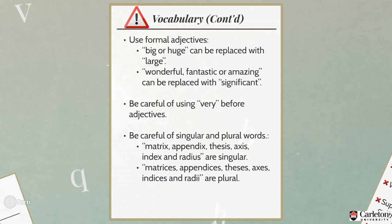Be careful when using adjectives. For example, "big" or "huge" can be replaced with "large"; "wonderful," "fantastic," or "amazing" can be replaced with "significant." Also, be careful of using "very" before adjectives — for example, when you use "very large," it should be clear from your text what is "large" and what is "very large." At the end, be careful of singular and plural words. For example, "matrix," "appendix," "thesis," "axis," "index," and "radius" are singular.